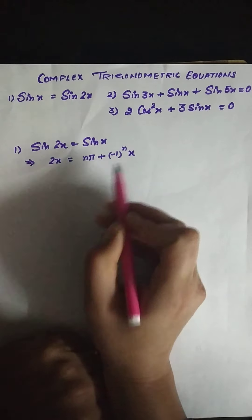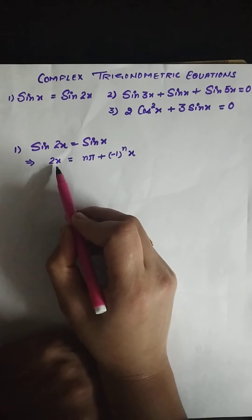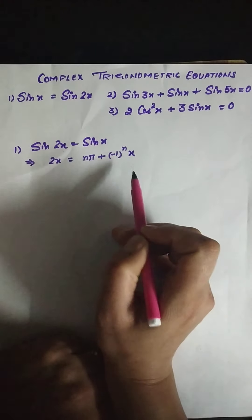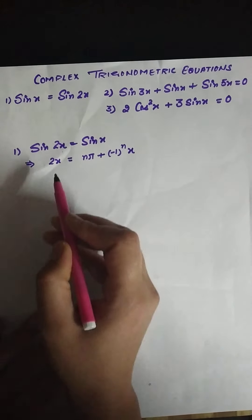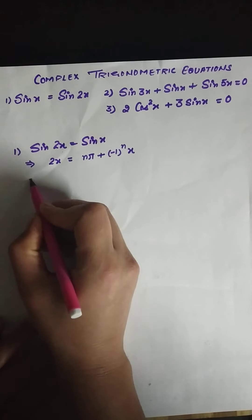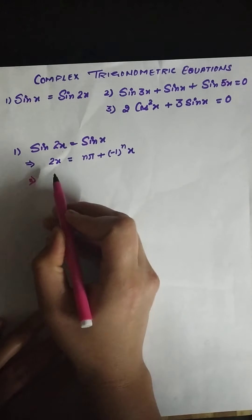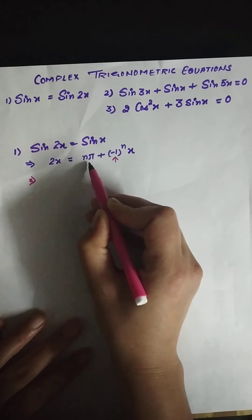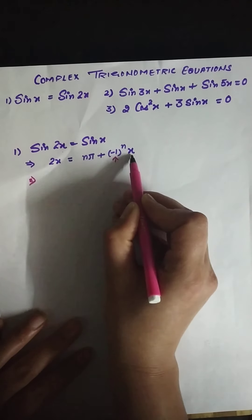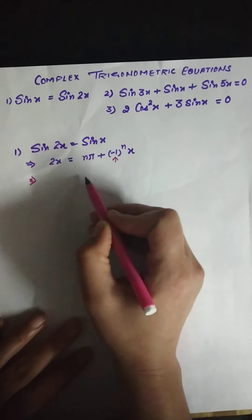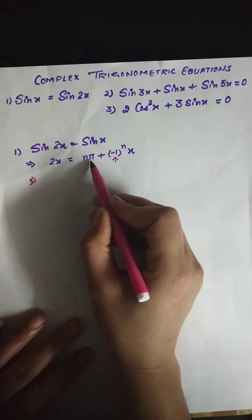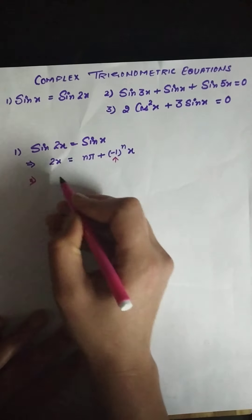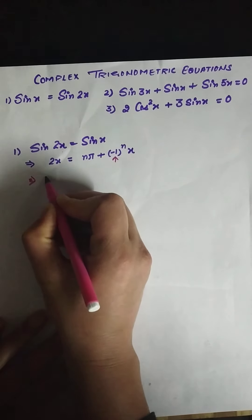Then we can write 2x equals nπ — but this is still in terms of x so we need to simplify it further. We know the meaning of this: if it is even π then x must be added, and if it is odd π then it should be subtracted. Keeping that in view, we can simplify this equation.